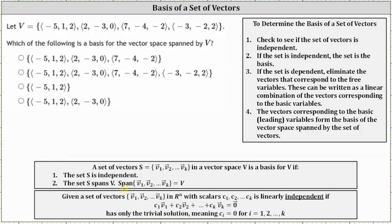To determine the basis of a set of vectors, number one, we check to see if the set of vectors is independent. To do this, we set up and solve the vector equation shown here below. If the equation only has the trivial solution, then the set is independent, and the set is the basis.